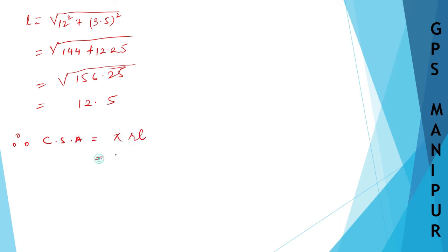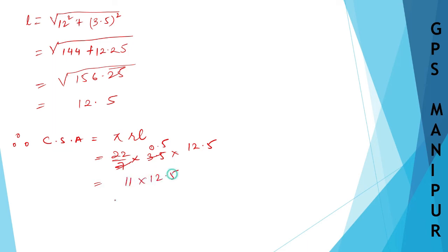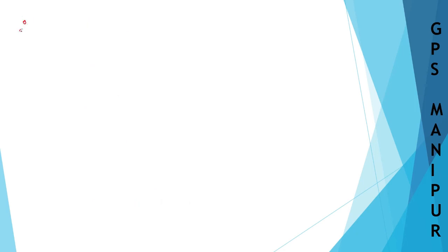Therefore, curved surface area = π × r × l = (22/7) × 3.5 × 12.5. Cancelling 7 and 3.5, we get 22 × 0.5 × 12.5 = 11 × 12.5 = 137.5 meter square.